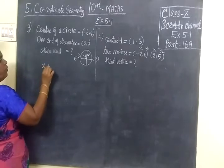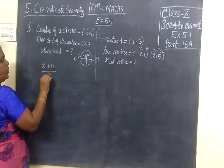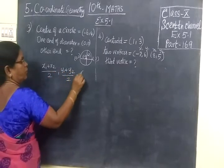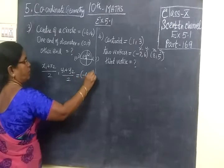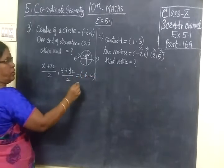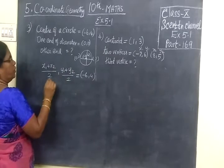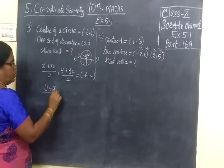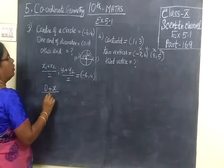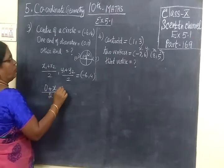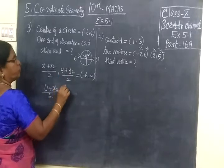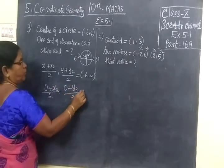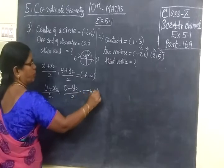Midpoint formula: x1 plus x2 by 2, y1 plus y2 by 2, equal to the answer (-6,4). For this we are substituting x1 = 0, x2 we don't know, so write as it is, then y1 = 0, y2 you don't know, y2 equal to (-6,4).